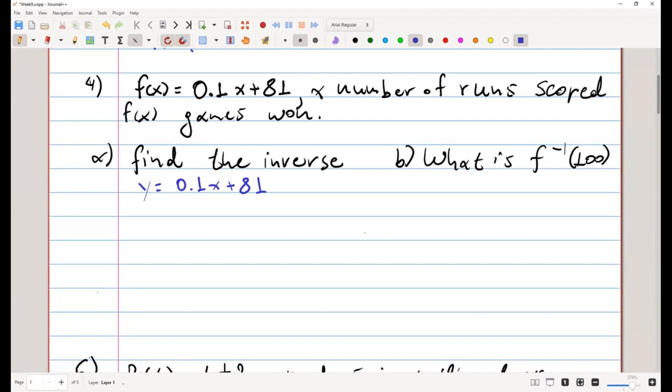So I'm going to isolate x. That will give me y minus 81 is equal with 0.1x. We either divide by 0.1 or multiply by 10, however you prefer to see this as.